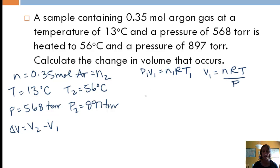So 0.35 moles times 0.08206 liter atmospheres over mole Kelvin. Now I write all my units all the time so I don't make a mistake. Sometimes writing things out is not such a bad thing. Let's convert our temperature by add 273, that gives me 286 Kelvin and for T2 that gives me 329 Kelvin.